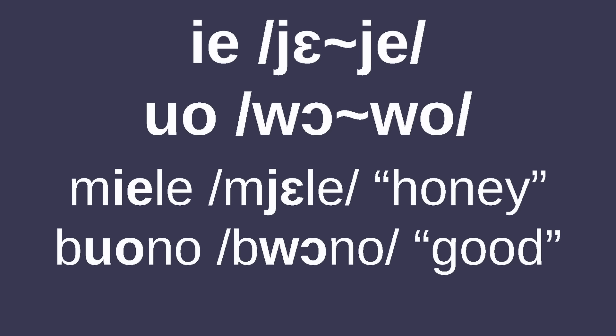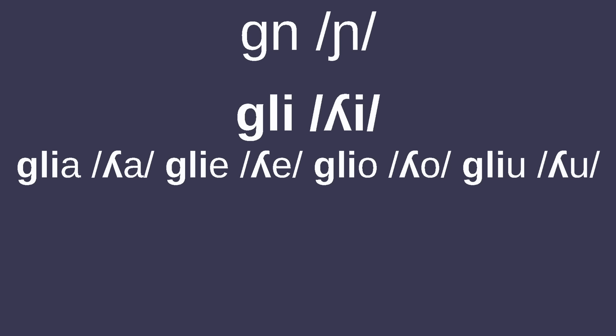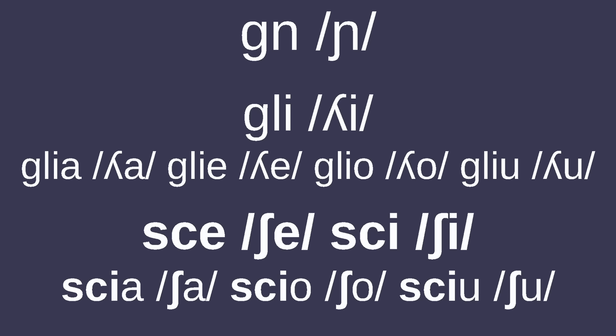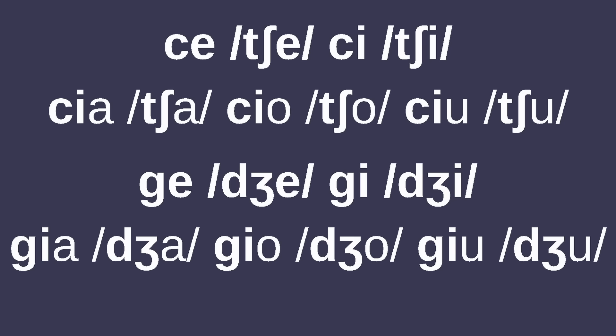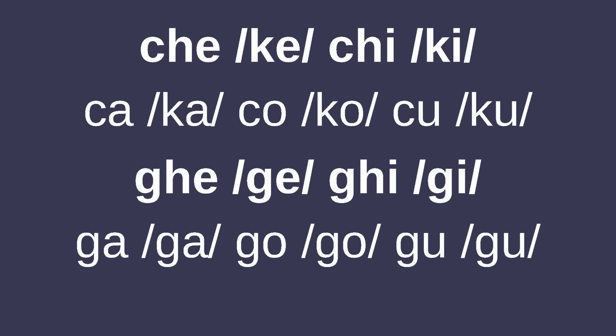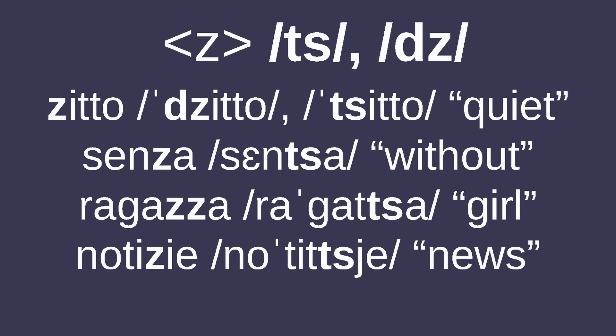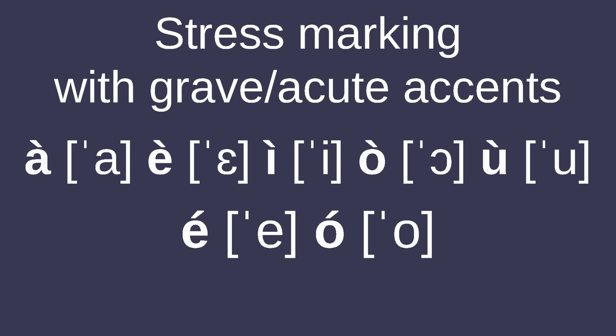Italian also sticks out with the glides YE and especially WO, like in 'miele' and 'buono.' Palatal /ɲ/ is written with GN, /ʎ/ with GL before soft I and GLI before hard A, O, U, and both SC and SCI can represent /ʃ/. Soft C and G are /tʃ/ and /dʒ/ respectively, and those letters are indicated to be soft before A, O, and U by adding an I between the letter and the vowel, and made hard before E and I with H. Z can represent either /ts/ or /dz/, and the grave accent is used to mark stress on vowels, except for close-mid vowels, which use acute accents.